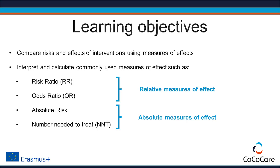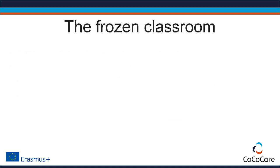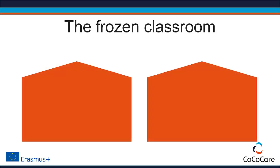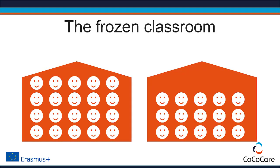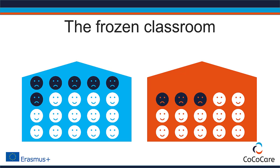Let's choose a simple example study to go through the different measures of effect. Imagine two classrooms, one with 20 children and one with 15 children. In one classroom, the heating system breaks down — it's winter and it's freezing — while the other classroom remains well heated and cozily warm. Within the following month, in the unheated classroom, 6 of the 20 children catch a cold and stay home ill. In the heated classroom, 3 out of 15 children get ill.